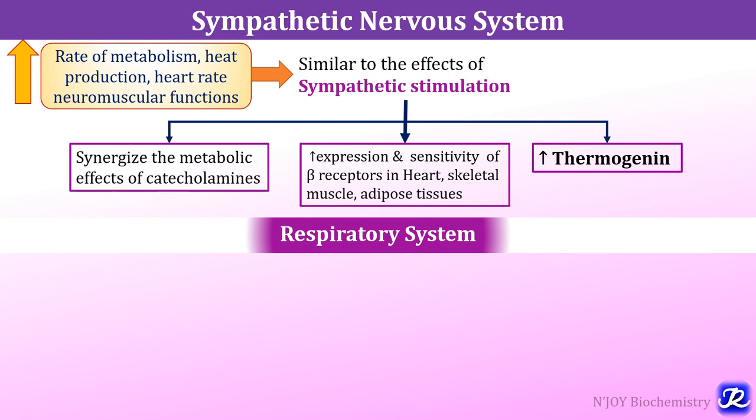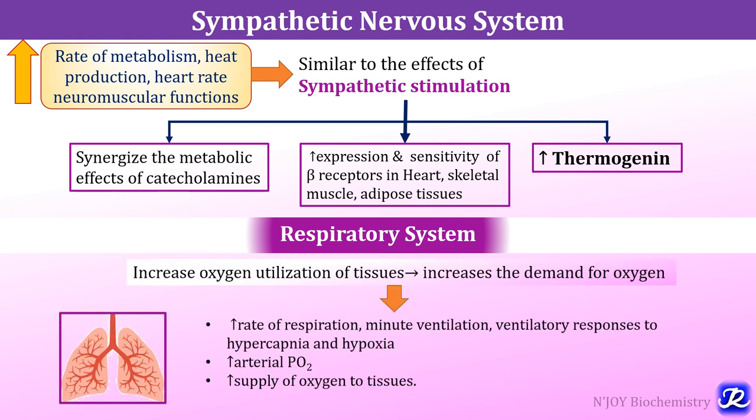Thyroid hormones affect the respiratory system through increased oxygen utilization by tissues, which increases the demand for oxygen. This leads to an increase in rate of respiration, minute ventilation, and ventilatory response to hypercapnia and hypoxia, resulting in increased arterial partial pressure of oxygen and increased supply of oxygen to tissues.